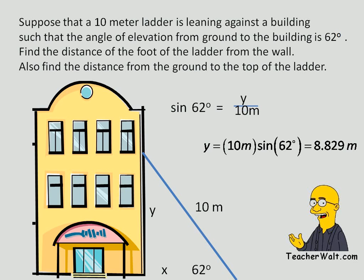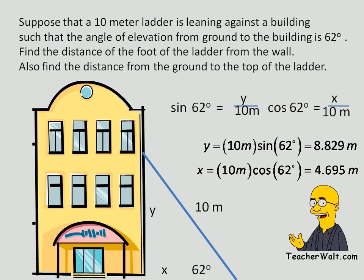Now to find x, the adjacent side, the side from the building to the foot of the ladder, that's of course cosine. We take cosine 62, the adjacent side over the hypotenuse, and solving in a similar fashion as before, we find that that distance is 4.695 meters.